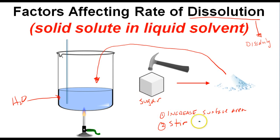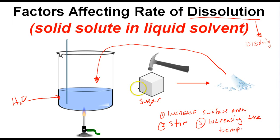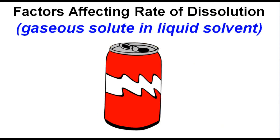Third and finally, we can put a flame under the beaker and heat the solution up. If we increase the temperature, the sugar in this solution of sugar water is going to have a much easier time dissolving. Increasing the temperature will increase the rate at which the sugar dissolves. Now let's take a look at factors that affect the rate of dissolving a gaseous solute in a liquid solvent.